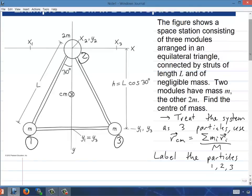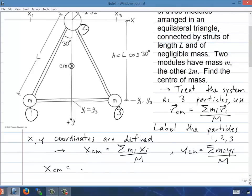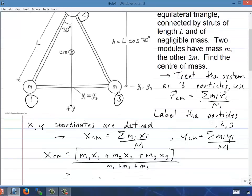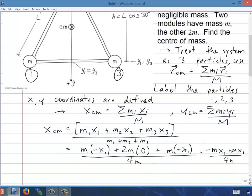The first step is to label these three particles. We'll go from left to right, 1, 2, and 3. The coordinate system has already been set up with the origin at this 2m, X going towards the right and plus Y going down. And now this equation for center of mass can be split into the X center of mass and the Y center of mass. Let's start with the X center of mass. It's going to be m1 x1 plus m2 x2 plus m3 x3 divided by m1 plus m2 plus m3. Plugging in all those numbers, that's going to be negative mx1 plus mx1. Those will cancel and you'll get zero. And that you could have seen by symmetry. You expect that since the object is symmetric around the origin horizontally, the center of mass should be at the origin in the X direction.